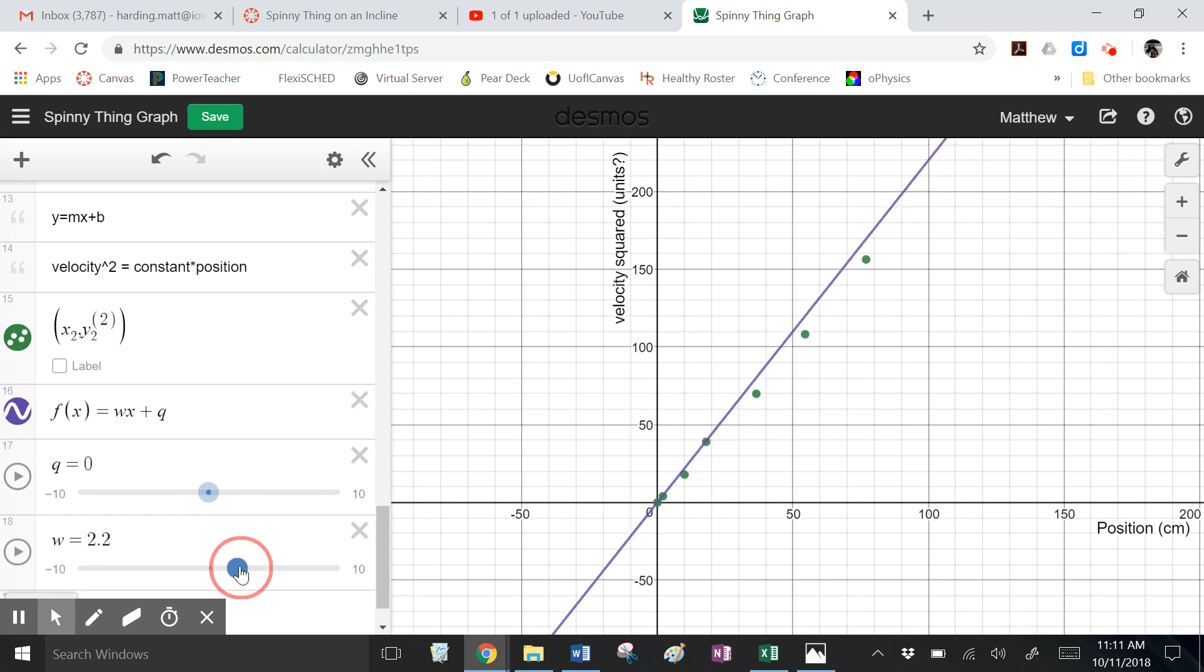And if I make q pretty darn close to 0, then I have a slope on this graph of pretty darn close to 2. 2 what, though? I need to think about what are my units if this is velocity squared and this is position in centimeters. What are the units for my slope here? And then we'll talk about what the equation of this line is. But this is a linear plot of velocity versus position.